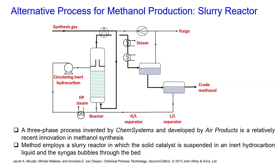Another alternative process for methanol production is the slurry reactor, a recent innovation and three-phase process involving gas, liquid, and solid. Invented by Chem Systems and developed by Air Products, it is a relatively recent innovation in methanol synthesis. The method employs a slurry-based reactor in which the solid catalyst is suspended in an inert hydrocarbon liquid and the syngas bubbles through the bed.